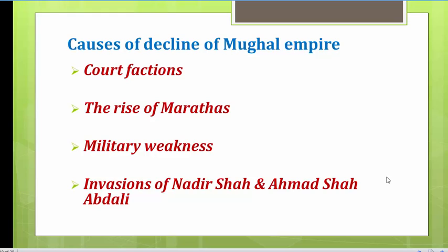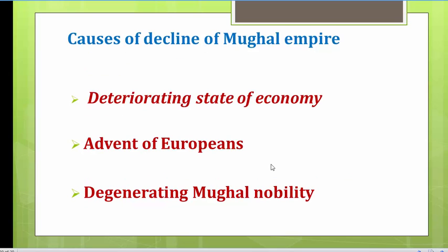The invasions of Nadir Shah and Ahmad Shah Abdali — discussed in detail — were major causes, as they plundered the state and disturbed the overall peace of the country. These invasions also exposed the weakness of the Mughal Empire so openly that even the Britishers came to know it was declining.